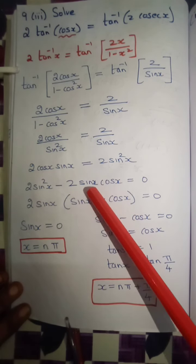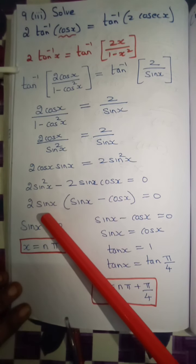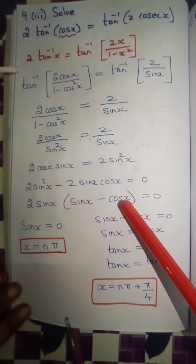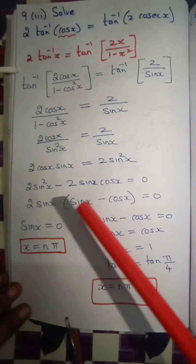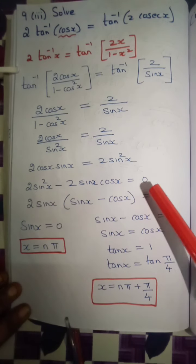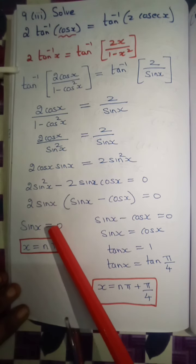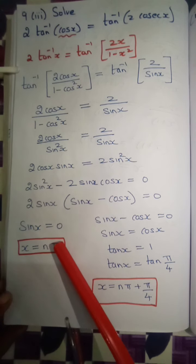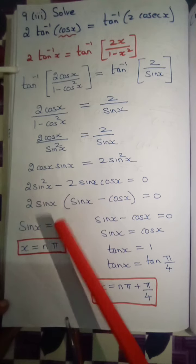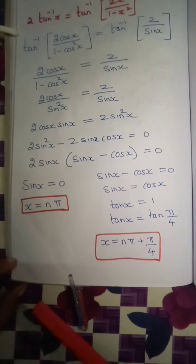Taking 2 sin x as the common factor: 2 sin x times (sin x minus cos x) equals 0. Setting the first factor to zero: 2 sin x equals 0, so sin x equals 0. From trigonometric equations (standard formula), if sin x equals 0, then x equals n pi.